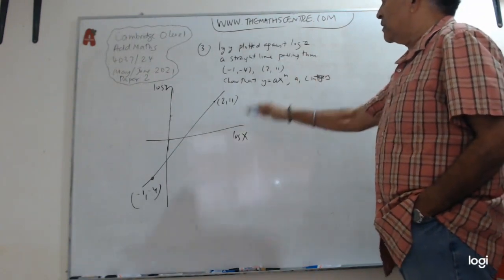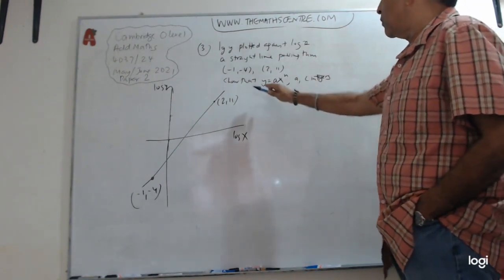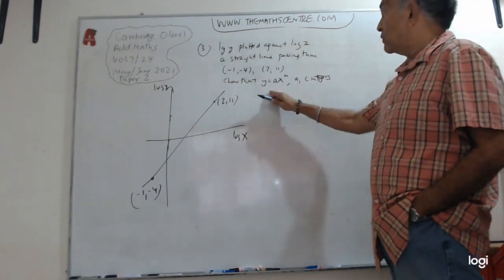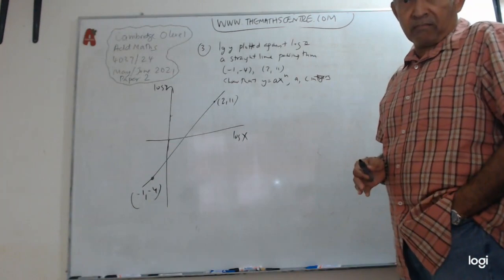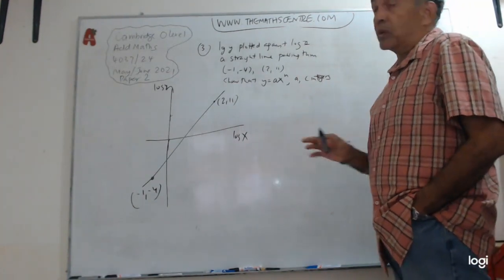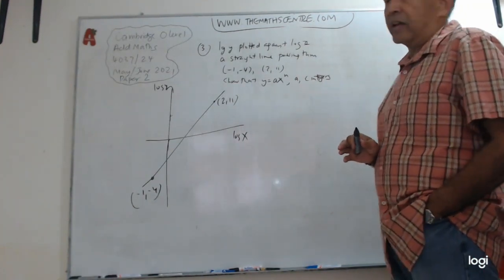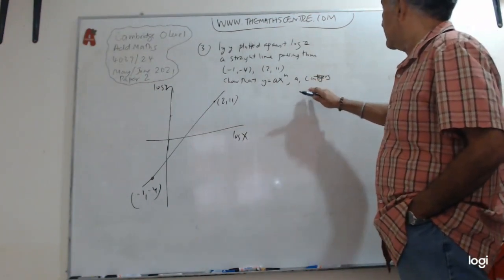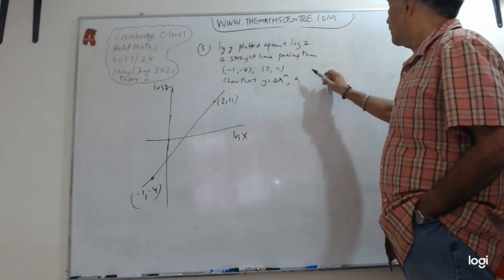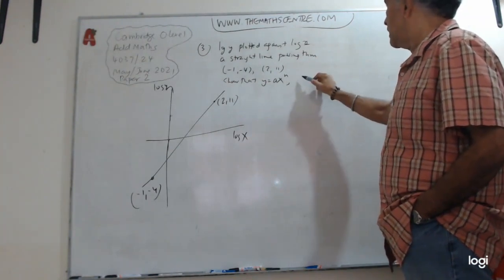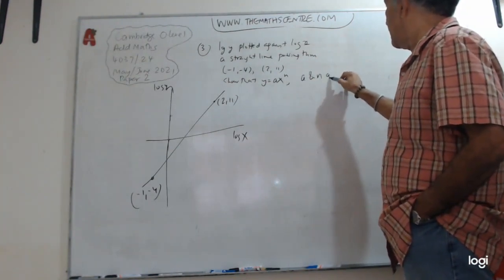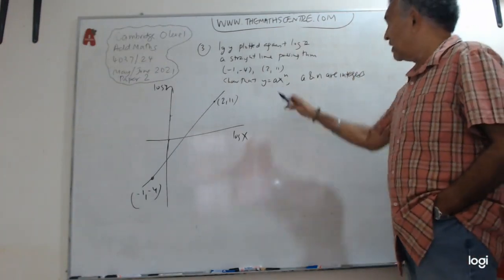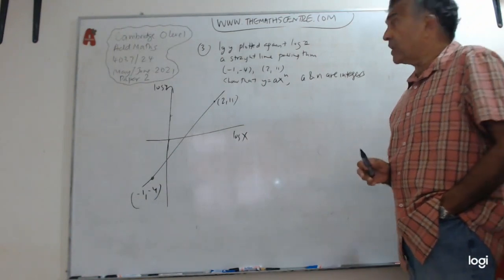So they're telling you that this straight line passes through these two points. We're asked to show that Y equals A times X to the power of N, where A and N are integers.